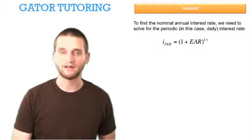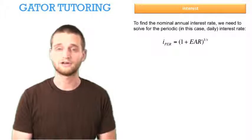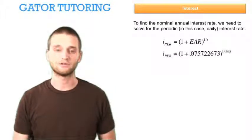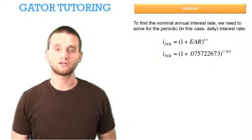In our case, a period is a day, so the question tells us there are 365 days in this year. So we just need to plug in our effective annual interest rate and plug in 365 for t.